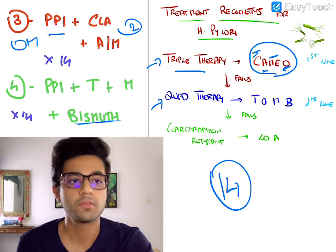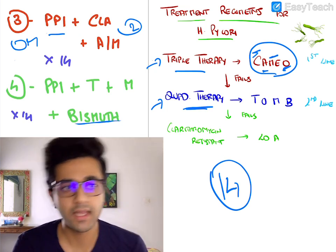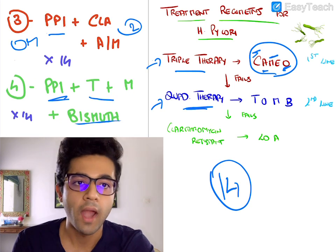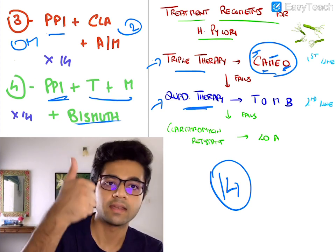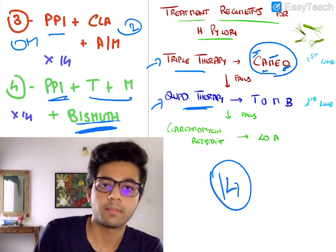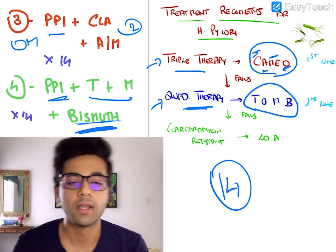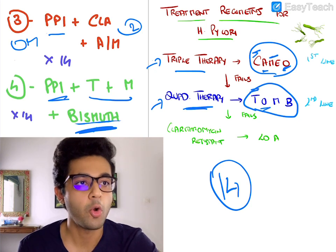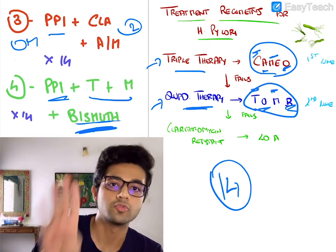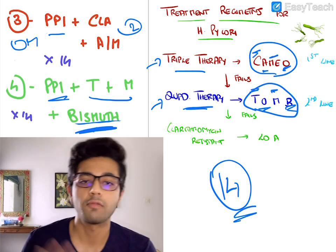Usually when the triple therapy regimen fails, the quadruple therapy regimen is tried — this is also called the second-line treatment for H. pylori. The quadruple therapy regimen has four drugs: one PPI (usually omeprazole), two antibiotics which include tetracycline and metronidazole, and bismuth is also added. Bismuth is only part of the quadruple therapy regimen. This can be remembered using the mnemonic TOMB: T for tetracycline, O for omeprazole, M for metronidazole, and B for bismuth — four letters for four drugs. Both the triple and quadruple therapy regimens are given for a total of 14 days.